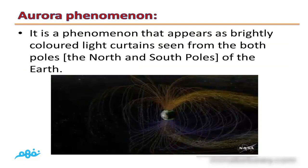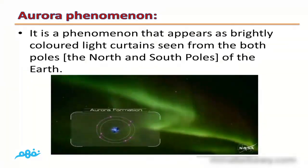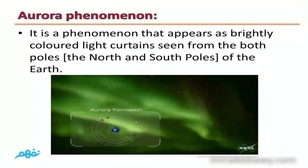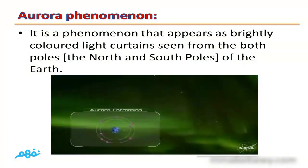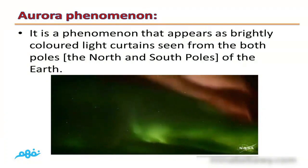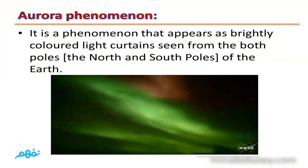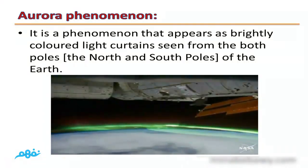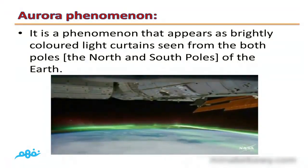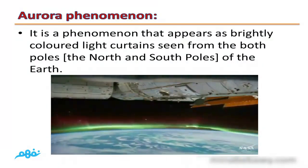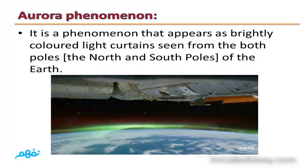Aurora phenomenon: It is a phenomenon that appears as brightly colored light curtains seen from both poles, the north and south poles of the earth. These bright colored curtains represent aurora.